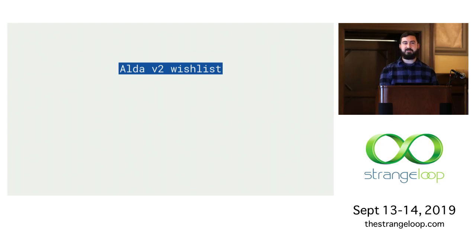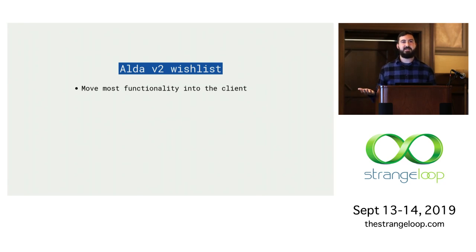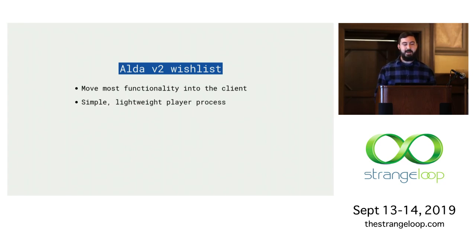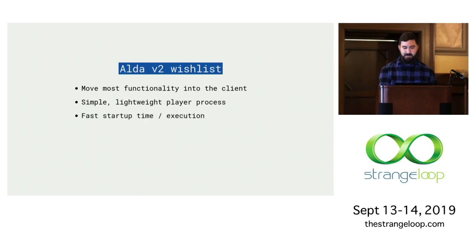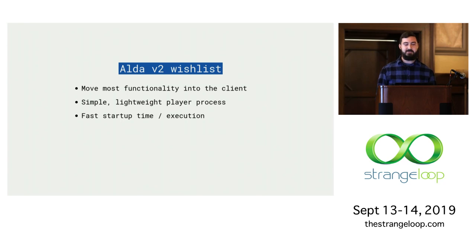With all these things in mind, I started putting together a wish list for the next major version. I wanted to move most of the functionality into the client and do away with background processes that the end user has to care about. But at the same time, I did want a background thread or process for playing scores, because I wanted to maintain that asynchronous workflow where you can say play something and then immediately regain control of your terminal. So I started thinking about a process that does nothing except just the playback bit. Since I was moving most functionality into the client, I'd have to address the Clojure runtime bootstrap time from phase one — maybe generate native executables to get closer to the metal.